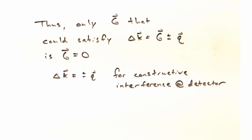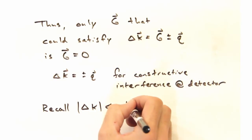So with this condition that delta k equals plus or minus q for constructive interference, we then need to think about what the magnitude of delta k then is. Since the biggest delta k we can get is twice the original k0 magnitude,